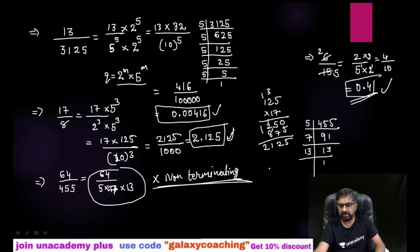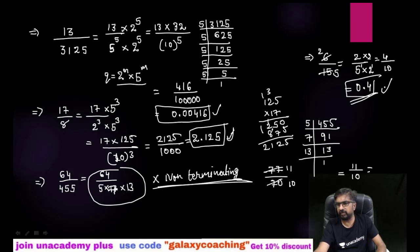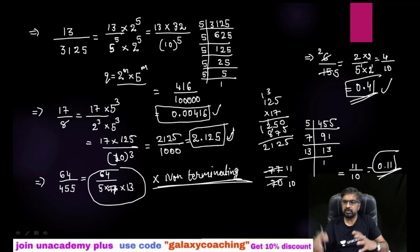The same issue comes up with 77 over 70. If you directly check the factors you might get non-terminating, but first reduce the fraction. Dividing both by 7 gives 11 over 10, so no further conversion is needed — the answer is directly 0.11. Always reduce the fraction first before checking.